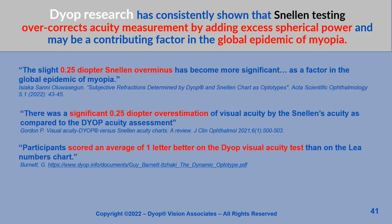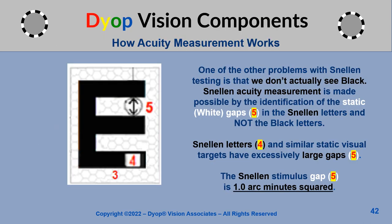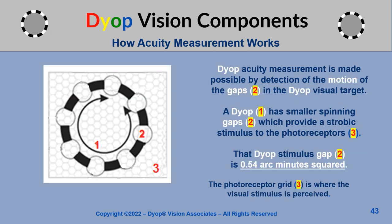Dyop research has consistently shown that Snellen testing overcorrects acuity measurement by adding excess spherical power and may be a contributing factor in the global epidemic of myopia. One of the other problems with Snellen testing is that Snellen acuity measurement is made possible by the identification of the static white gaps in the Snellen letters and not the black letters. Snellen letters and similar static visual targets have excessively large gaps, with a Snellen stimulus gap of 1.0 arc minute squared. Dyop acuity measurement is made possible by detection of the motion of the gaps in the dyop visual target.